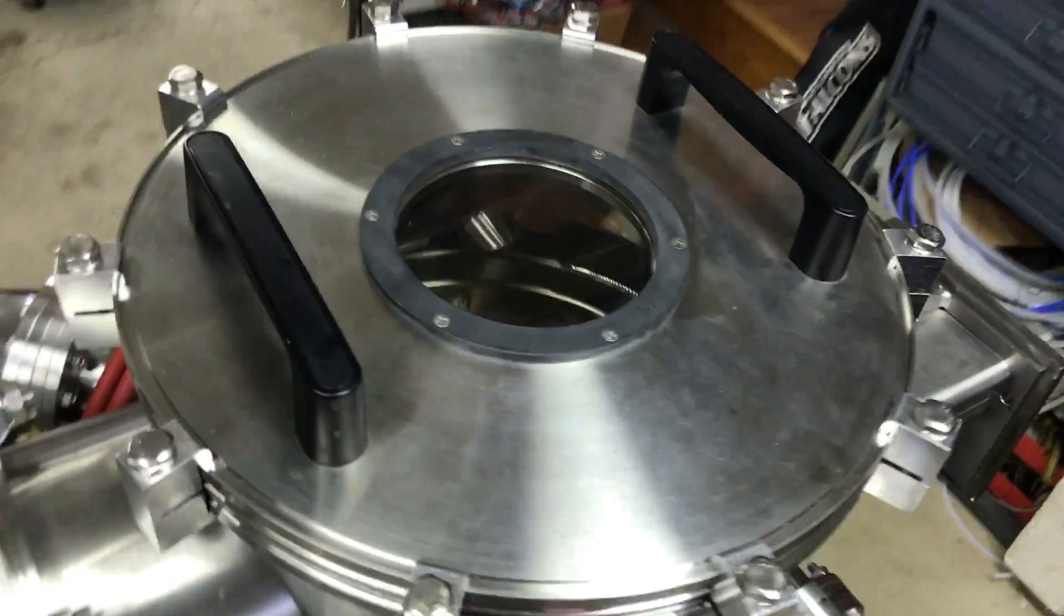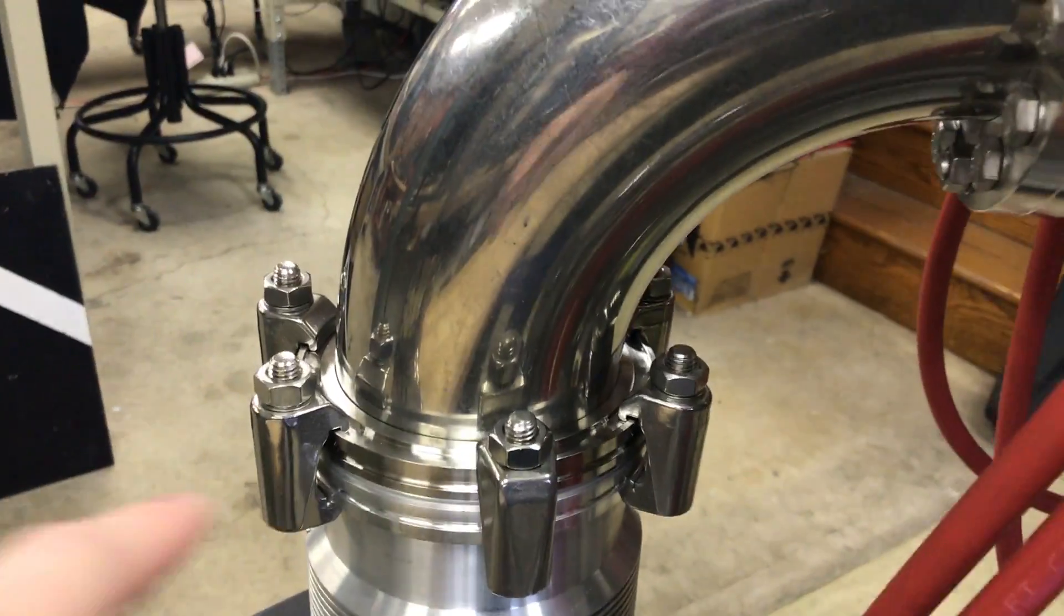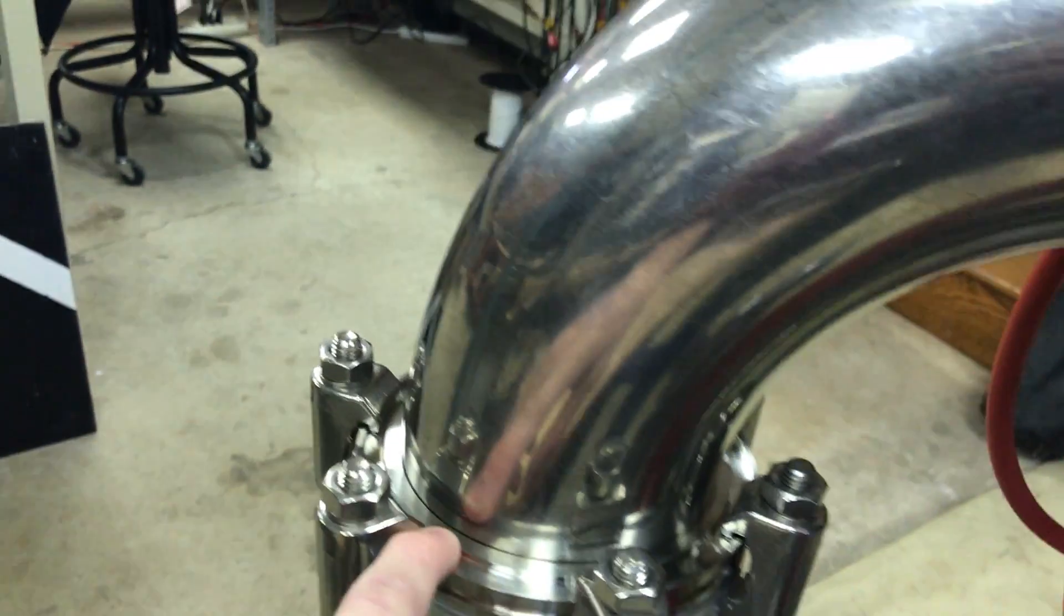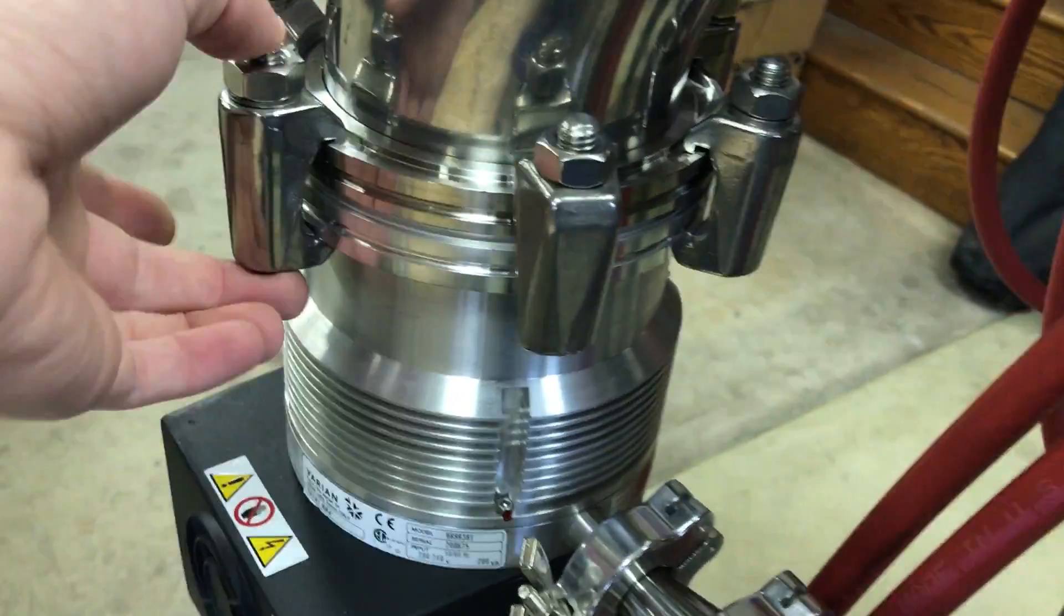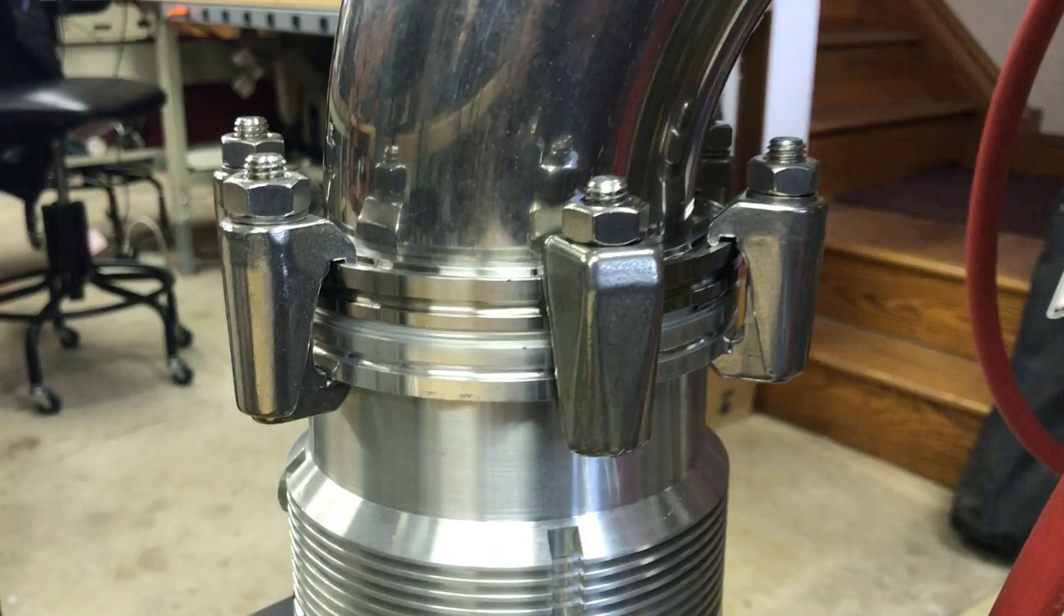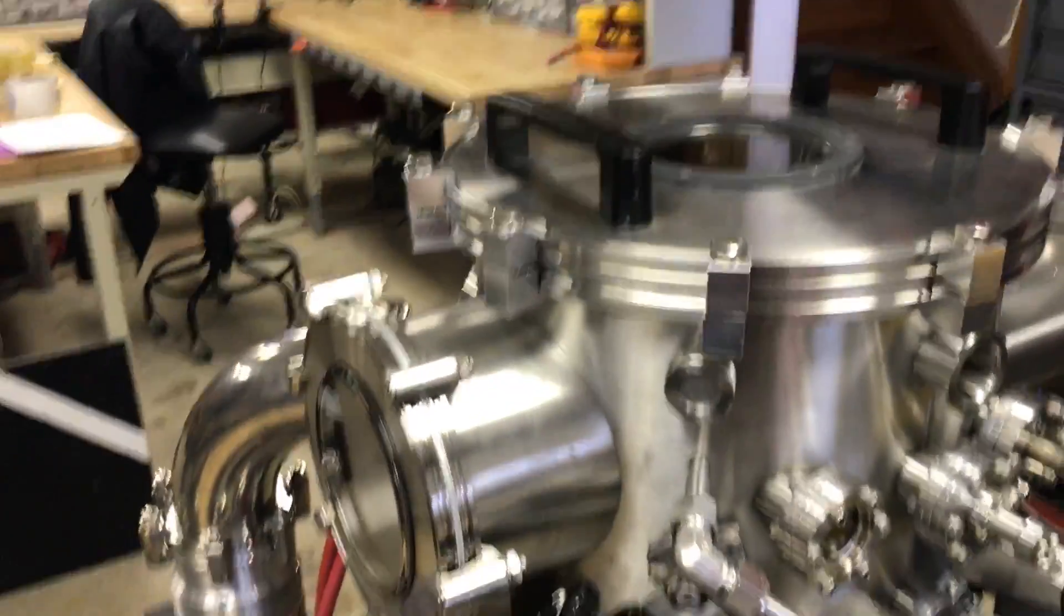My pump is ISO-100 right there. It's about four inches across. So I have these clamps on it. And again, it's got that centering ring assembly in the middle. So ISO is used pretty extensively.